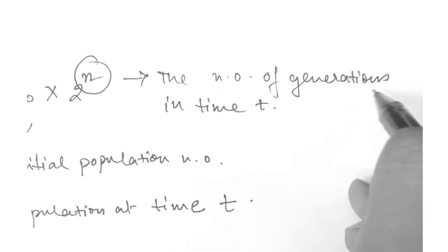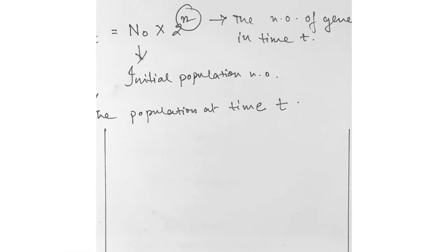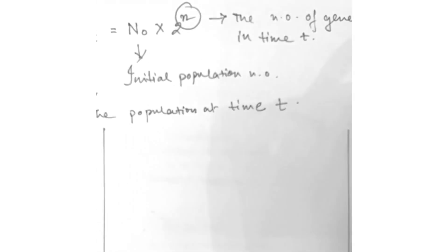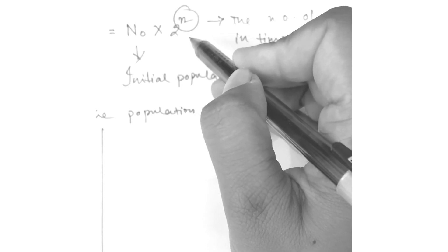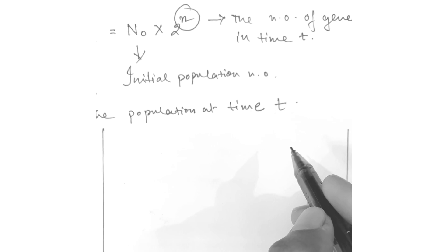n is the number of generations in time t. Now we will solve this equation for the number of generations in time t, that is n. Taking all logarithms to the base 10, we get the same equation in this form.